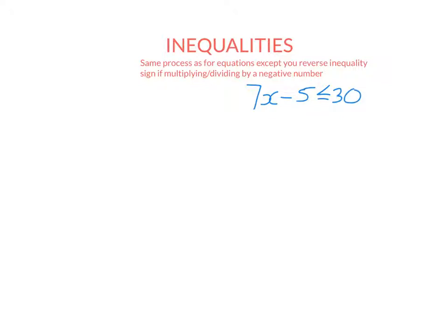So the difference between this and the normal equation, well, there's actually infinitely many solutions. There are so many numbers that you can substitute for x that will make this statement true. So x equals 1 is a solution because 7 times 1 minus 5 is less than or equal to 30. 2 is a solution because 7 times 2 minus 5 is less than or equal to 30. A half would be a solution.